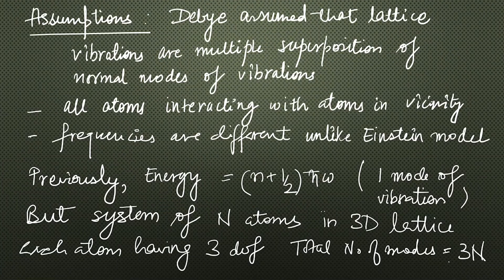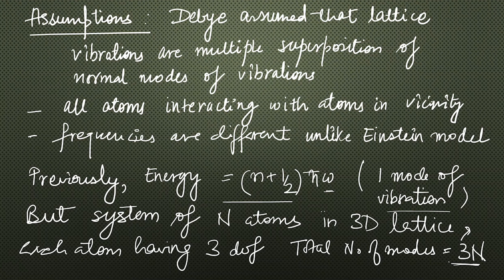Let's start with the assumptions. Debye assumes that lattice vibrations are a multiple superposition of normal modes of vibration. Basically here all the atoms are interacting with the other atoms in their vicinity. Another assumption, in contrast with Einstein, is that the frequencies with which each atom is vibrating or oscillating are different. These are the two contrasting assumptions of Debye. Previously we took omega to be the same for all atoms, so we had one mode of vibration. But now a system having N atoms in a 3D lattice has 3N modes — the factor of three comes from polarization.